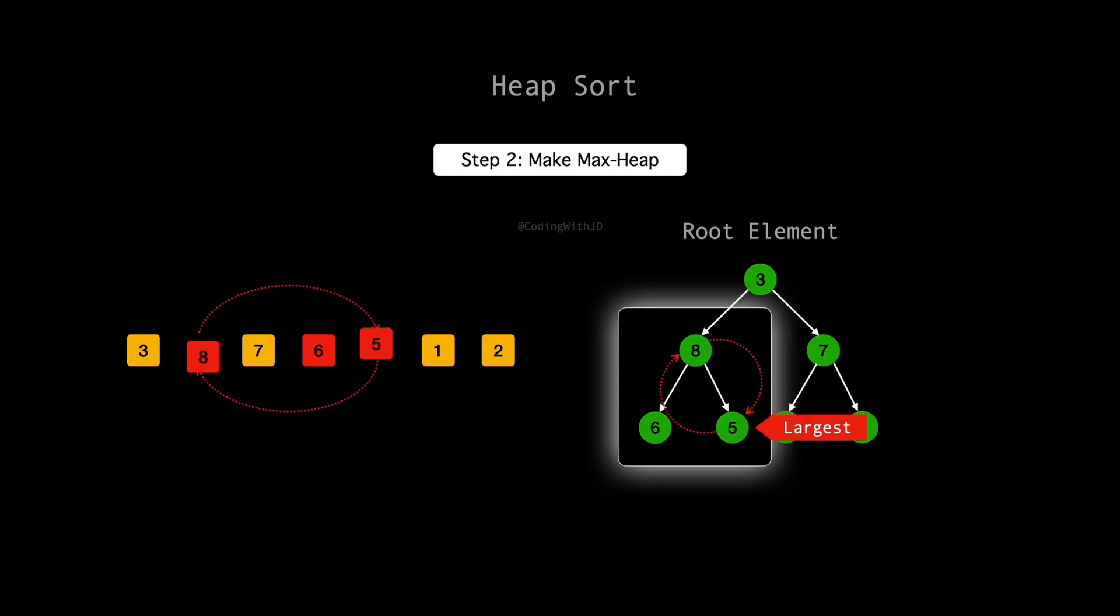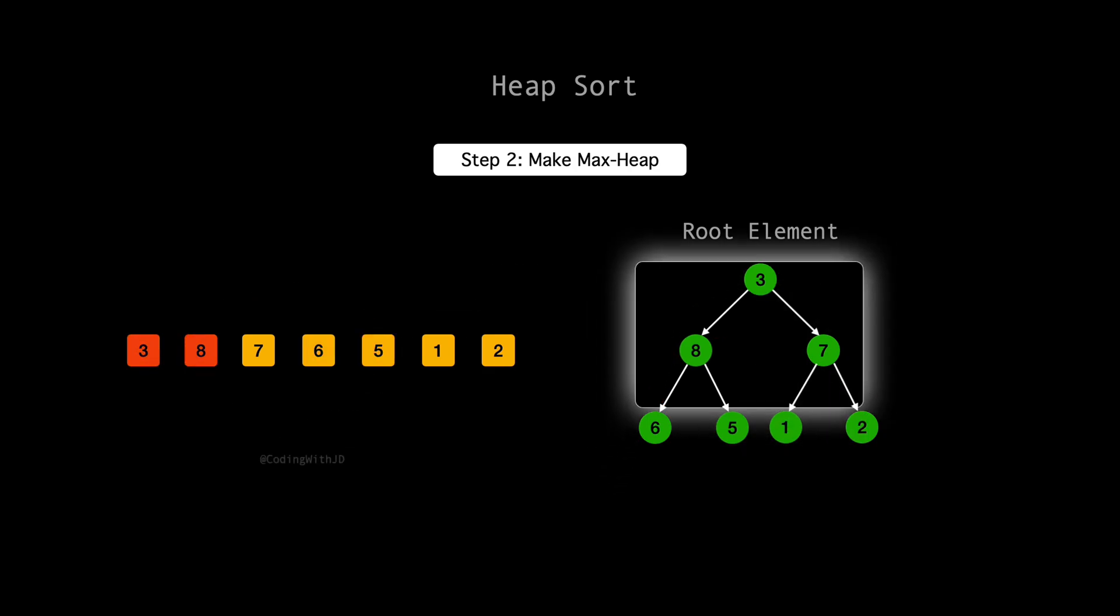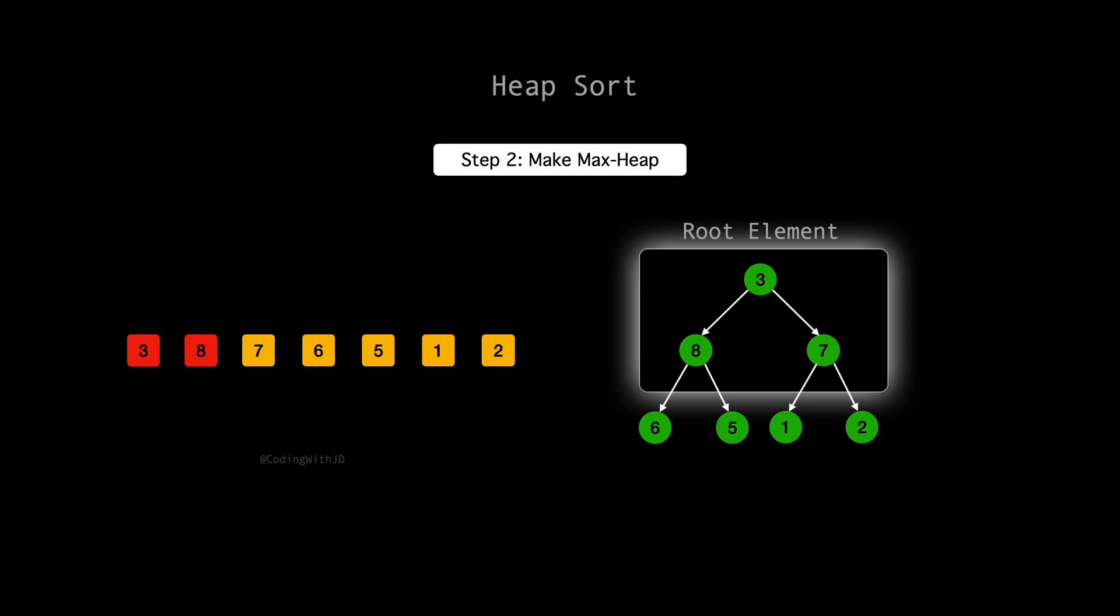With those swaps, our next focus is the root of the tree. 3 is currently the root, but now below it, 8, which replaced 5, and 7, which replaced 1, are larger. 8 is the largest of them all, so 3 and 8 need to change places.